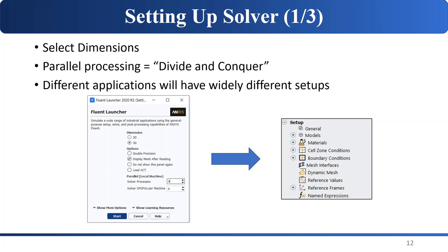The next step is setting up the solver. You want to select the dimensions — 2D or 3D, which should be very straightforward. You can also set up parallel processing, where you divide and conquer by literally dividing up the mesh so each processor solves a section and puts it together at the end. This can speed things up but can also introduce errors. Different applications have widely different setups, so it's probably best to see what others in your field are doing.